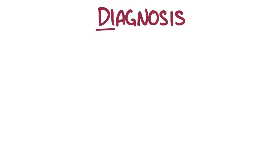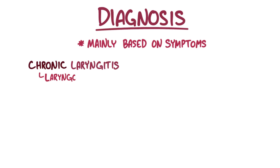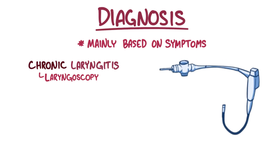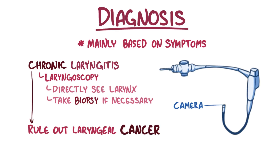Diagnosis of acute laryngitis is mainly based on the symptoms. For chronic laryngitis, laryngoscopy can be helpful — that's when a long tube containing a camera is inserted into the mouth to directly see the larynx and to take a biopsy of the tissue if needed. The main purpose of this is to ensure that there is no sign of laryngeal cancer.